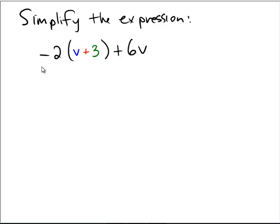This simplifying expression asks us to take negative 2, multiply it against the quantity v plus 3, and then add 6v.